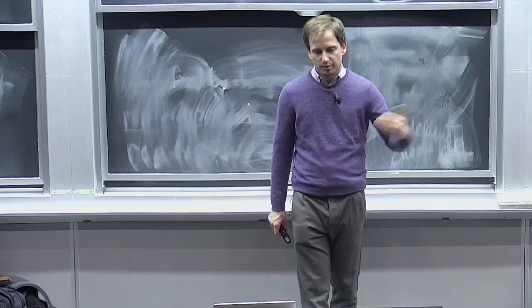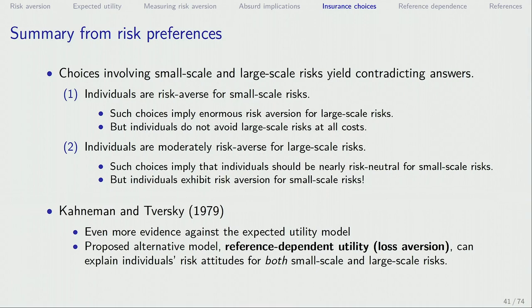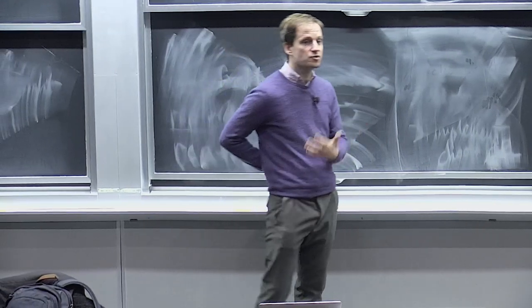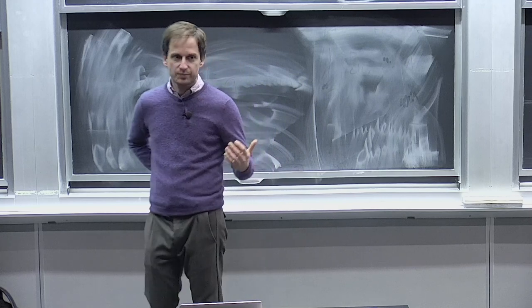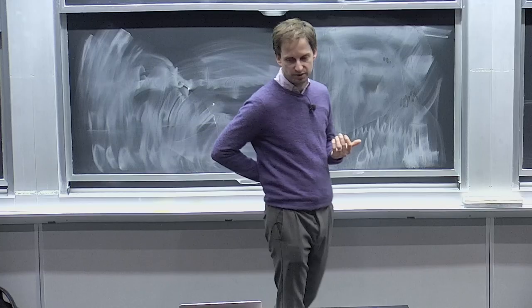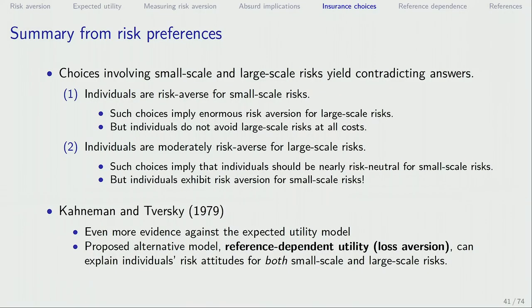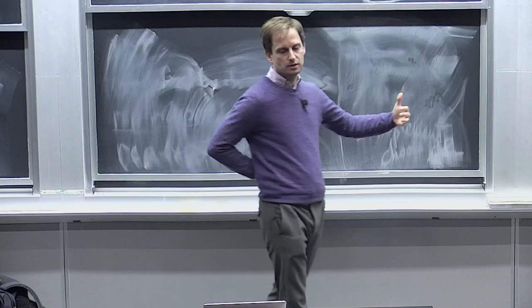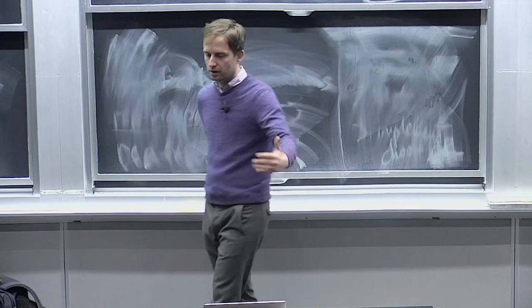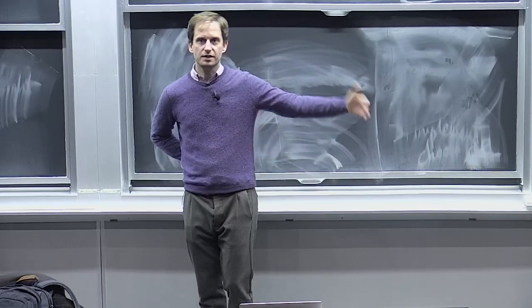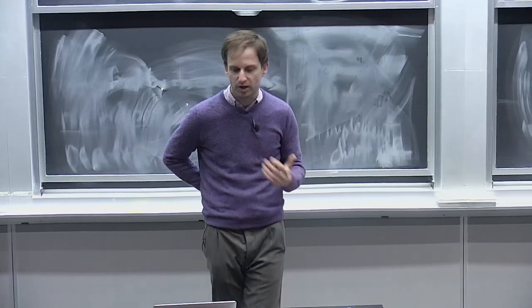There's an older, very famous and seminal paper by Kahneman and Tversky. Kahneman got the Nobel Prize for this and similar work. Importantly, Kahneman is a psychologist, and they were doing psychology experiments that turned out to be extremely influential for how economists think about risk preferences — particularly reference-dependent preferences. They showed evidence against expected utility and proposed an alternative model: prospect theory.